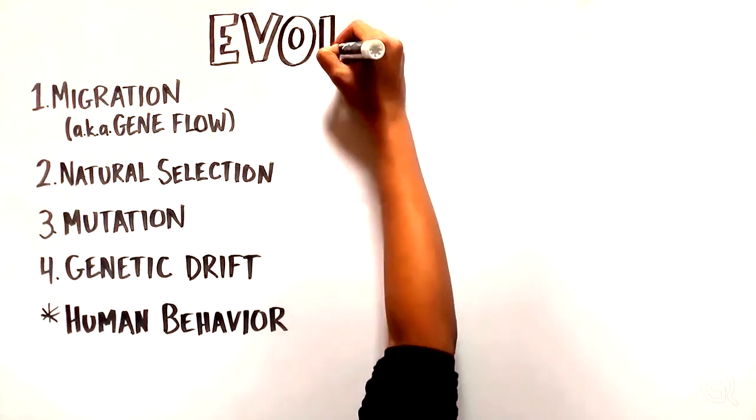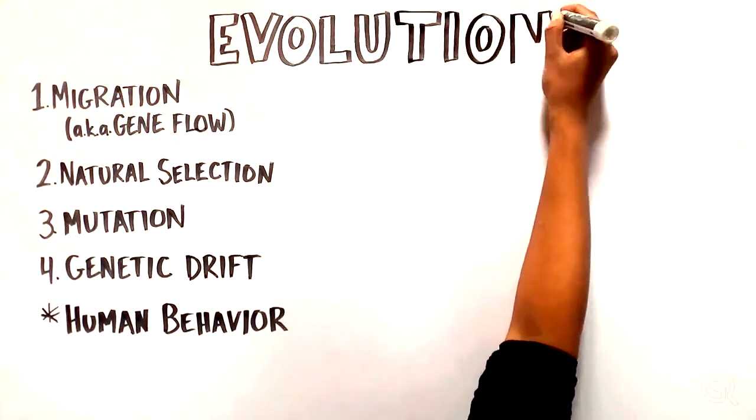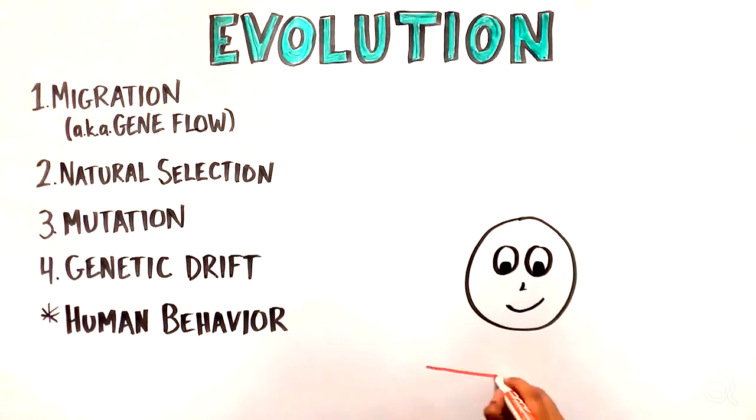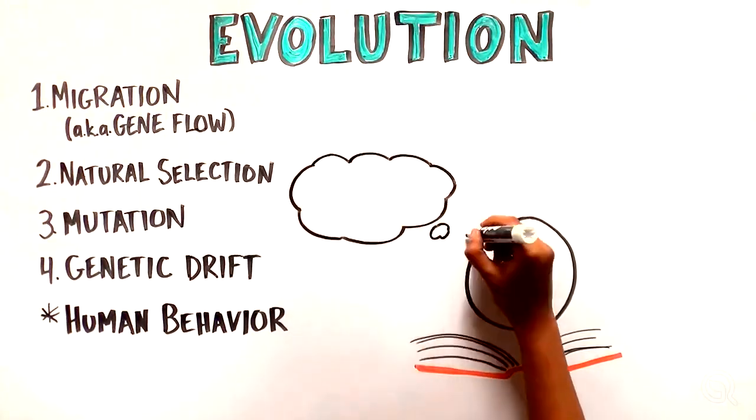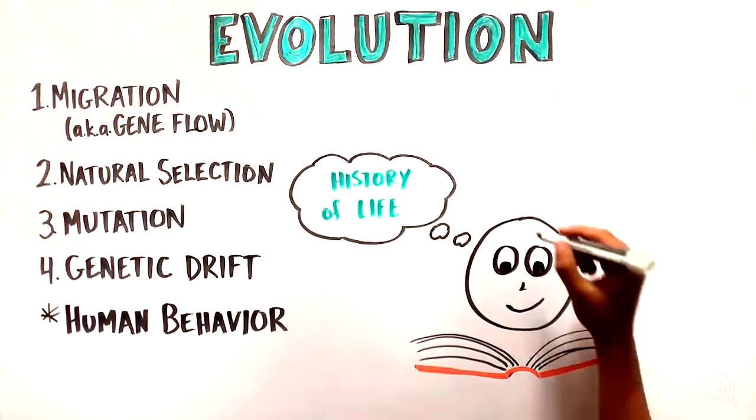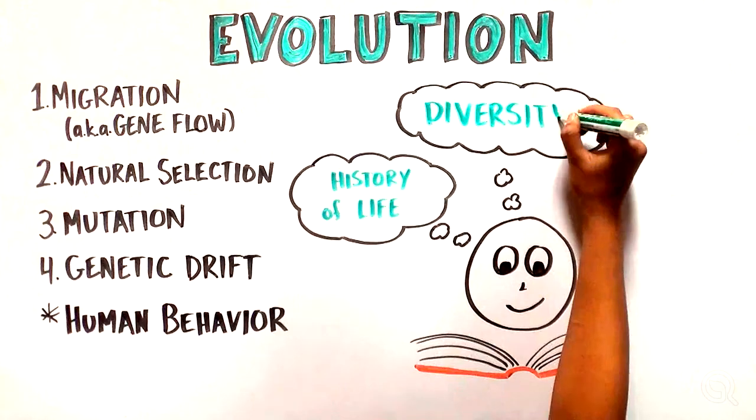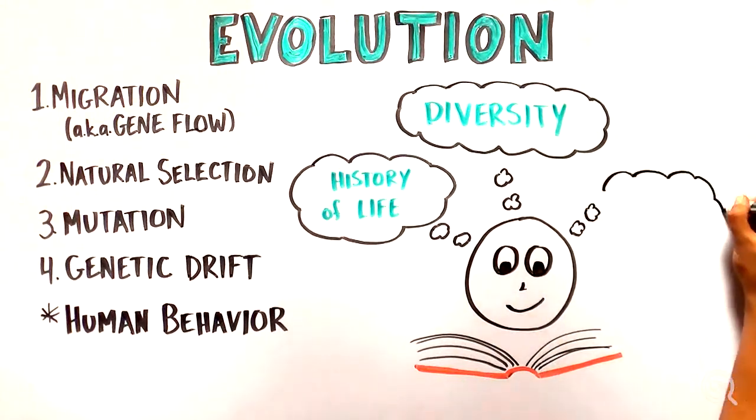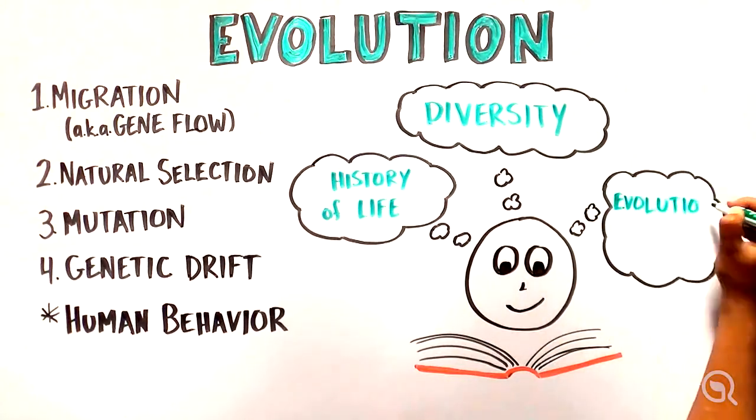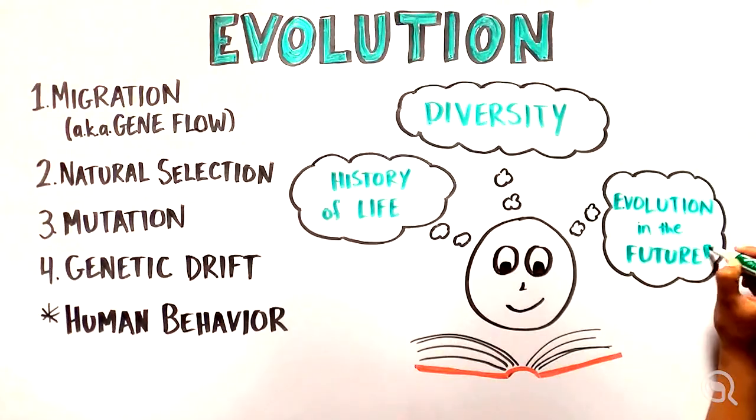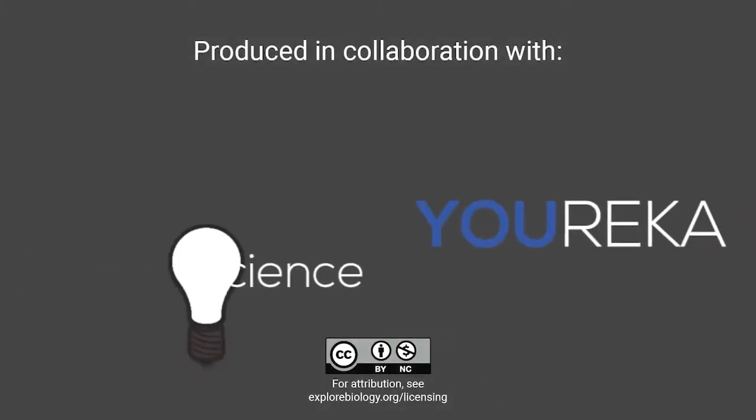As you've seen, evolution occurs from one generation to the next and is influenced by multiple factors: migration, natural selection, mutation, and genetic drift. Studying evolution allows us to understand the history of life on Earth and the remarkable diversity that comes with it, as well as providing a framework for thinking about evolution in future generations.